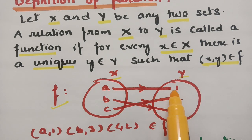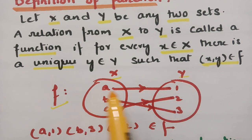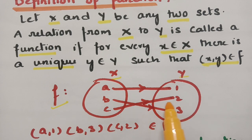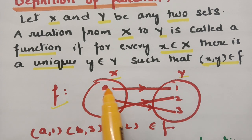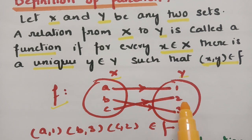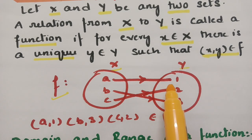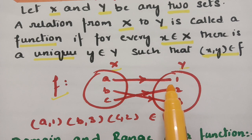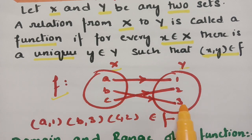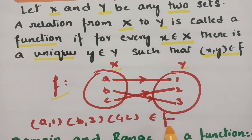For example, if you take set x containing {a, b, c} and set y containing {1, 2, 3}: a is mapped with 1, b is mapped with 3, and c is mapped with 2. So every element in x is mapped with every element in y. The ordered pairs (a,1), (b,3), (c,2) belong to f, and f is called a function.